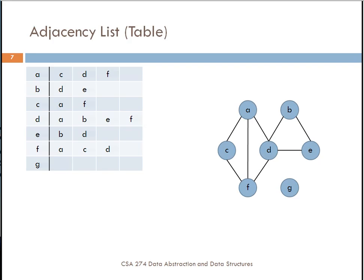Here is an adjacency list shown as a table. The first row has element A, and it says that vertices C, D, and F are directly connected to it. If you look at the picture of the graph itself, you see A is directly connected to C, D, and F. Likewise with B, it is directly connected to nodes D and E. Node C is directly connected to node A and F. Node D is directly connected to A, B, E, and F. Node E is connected to B and D. Node F is connected to A, C, and D. And then node G is disconnected, so it isn't connected to any nodes.